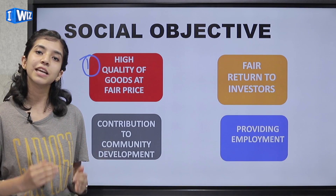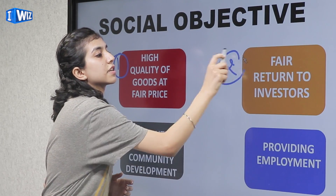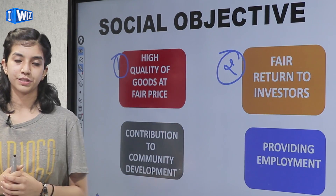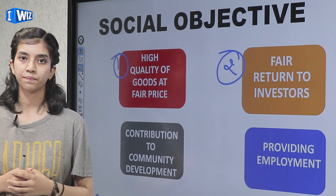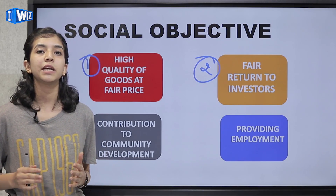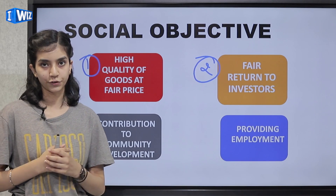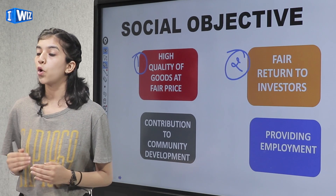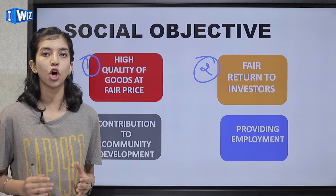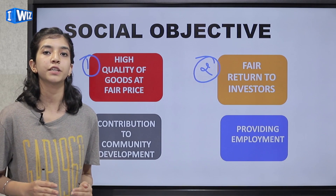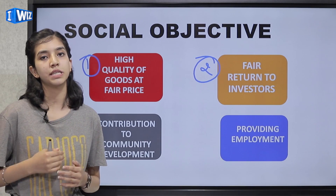The second social objective is fair return to investors. An investor wants that his dividend or his share in the profit should be fair, so that he can continue with his investments.